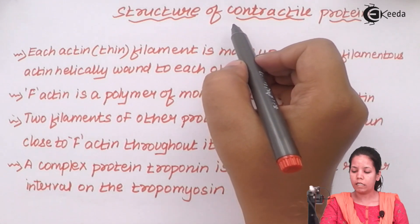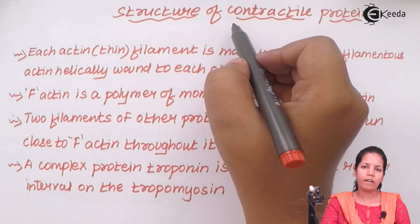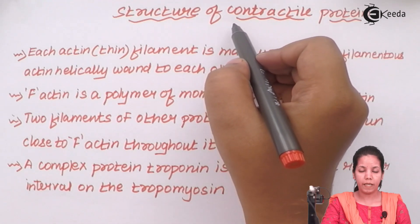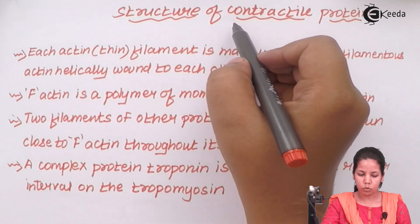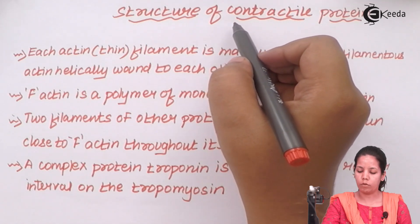Structure of contractile protein: contractile proteins basically include your F-actin, troponin, and tropomyosin.